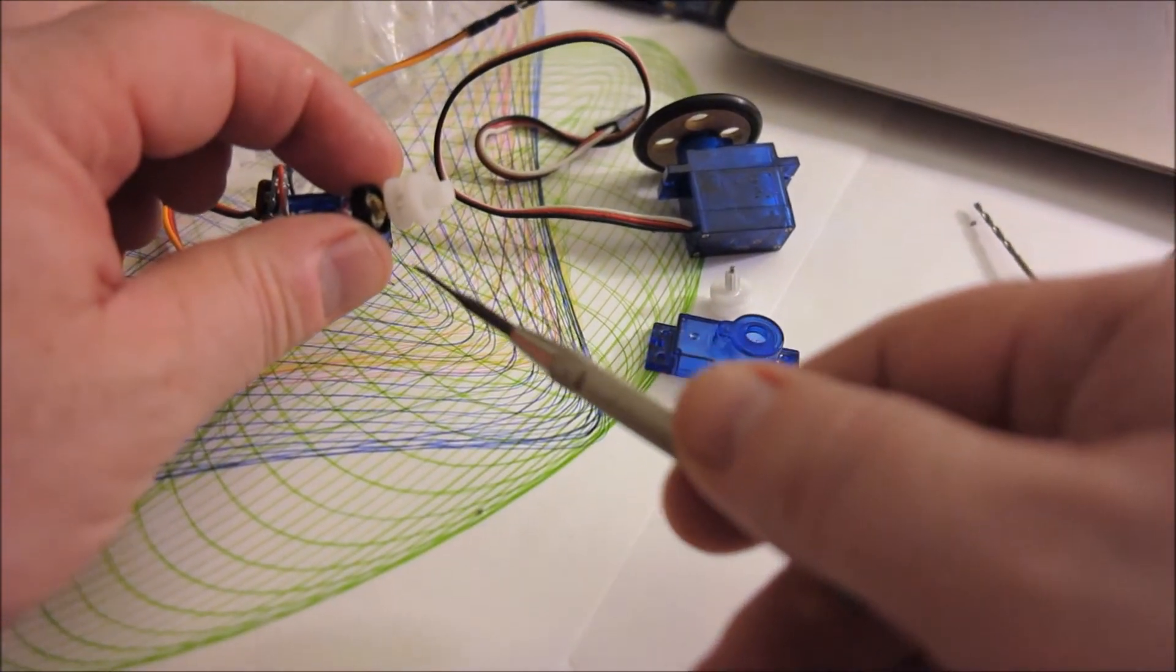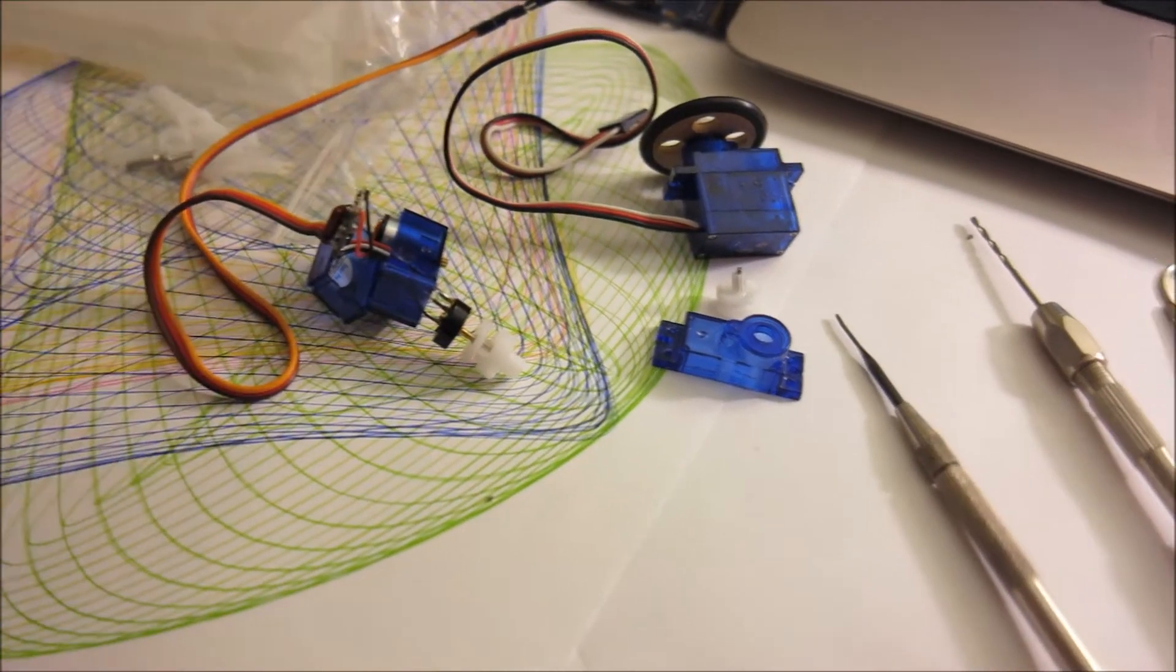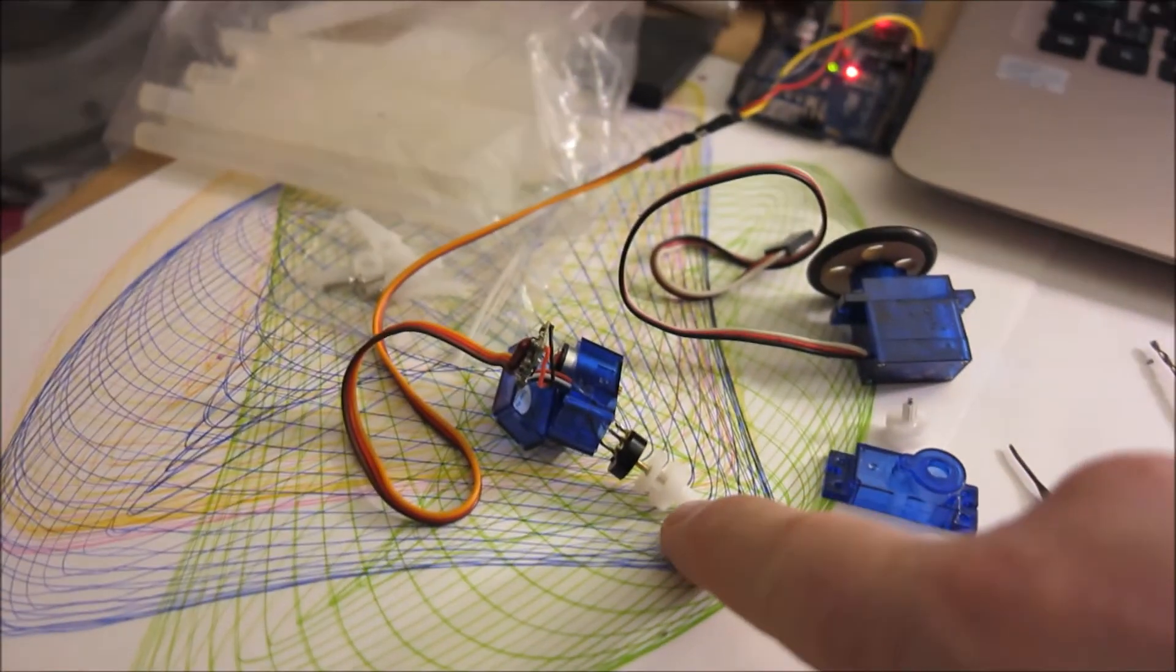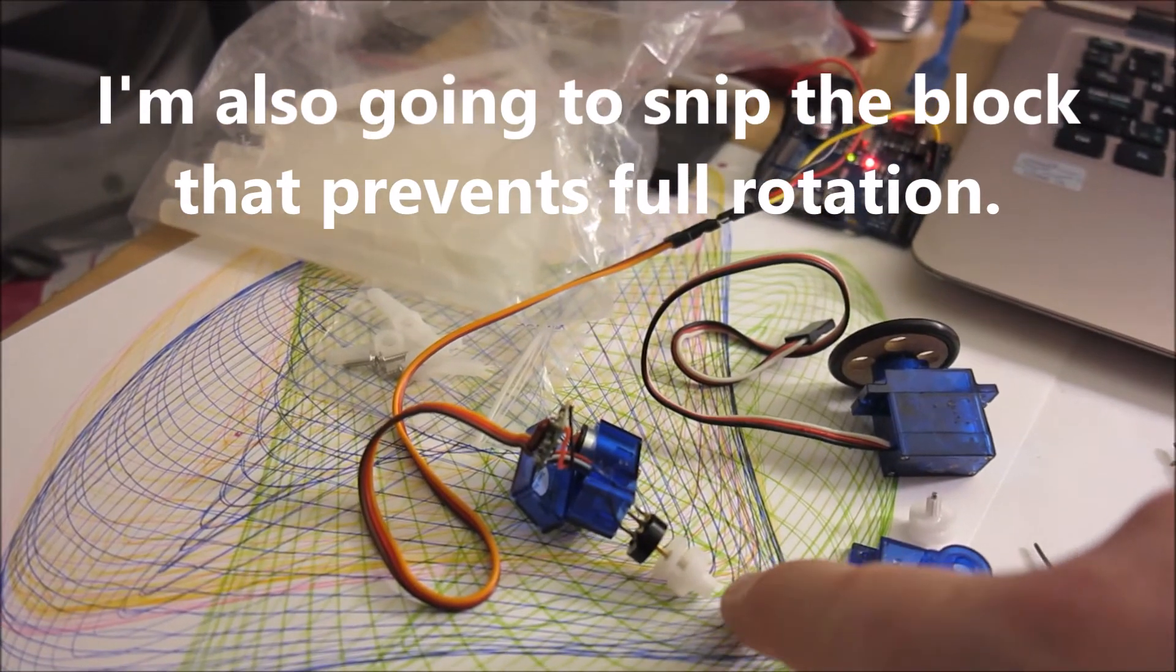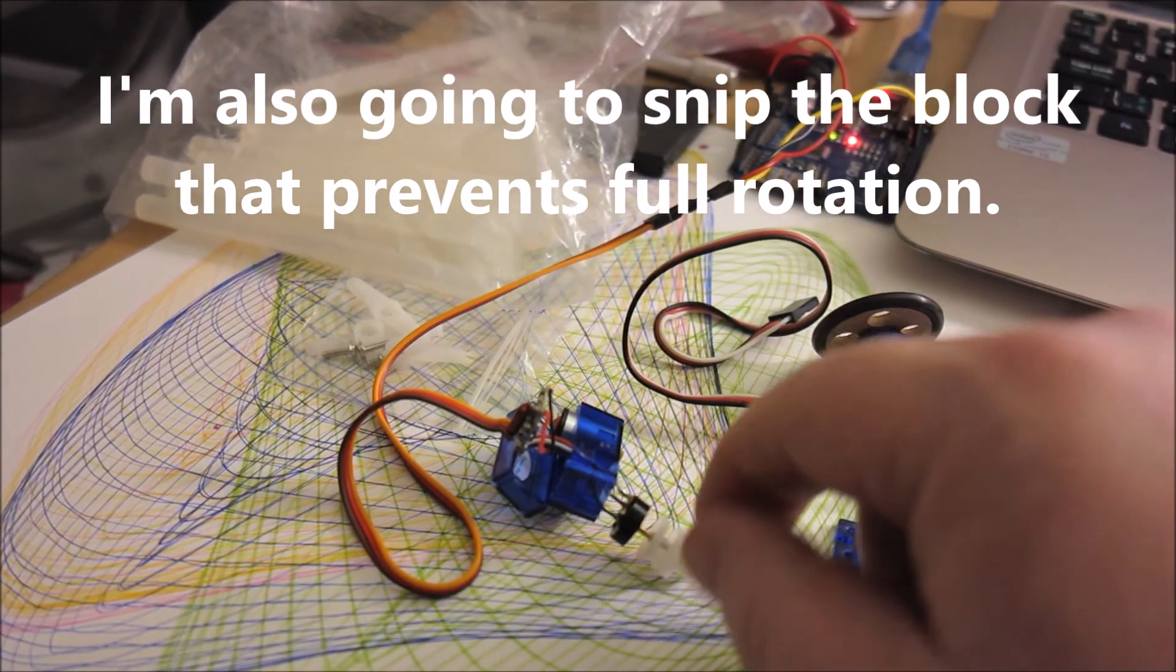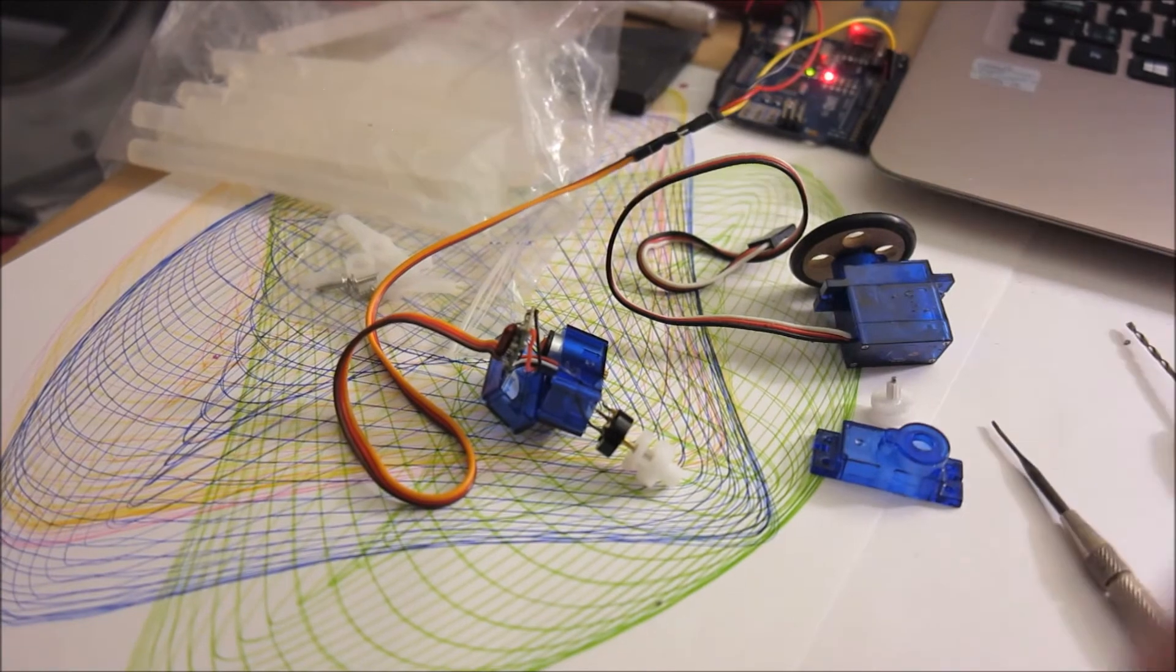Further, I'm going to remove this output gear here and I'm going to drill it out so it can ride on that shaft instead of turning the pot.